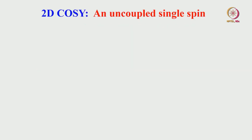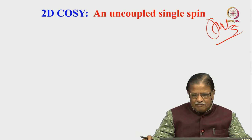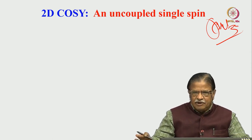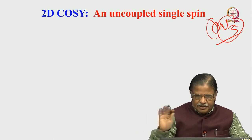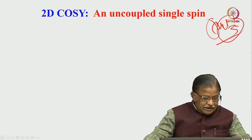Let us see how the COSY pulse sequence works — some conceptual understanding is needed. We will start with 2D COSY for a single uncoupled spin, a proton not coupled to anything else. A simple example is the CHCl3 molecule. We look at the proton and assume the natural-abundance 13C (about 1%) is not coupled to the proton. So we have a single proton, one spin, uncoupled to anything else, and we will analyze the 2D COSY spectrum of this single spin.